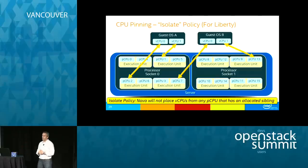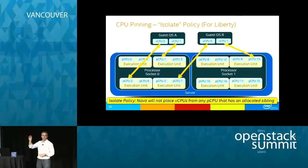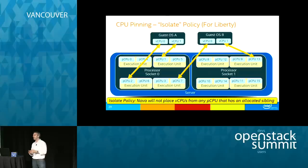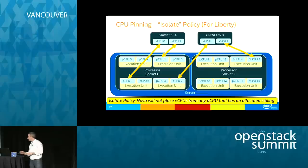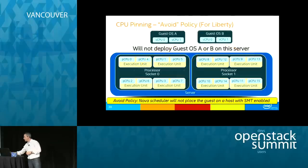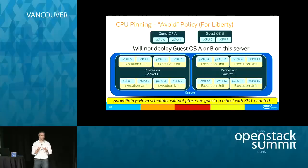The 'isolate' policy ensures a vCPU maps only to a physical CPU without a sibling already mapped, giving great host isolation for deterministic execution. A third Liberty policy, 'avoid', prevents deploying workloads on processors not configured with SMT, for workloads that prefer not to have simultaneous multithreading enabled.